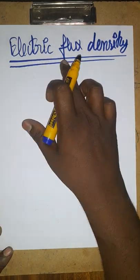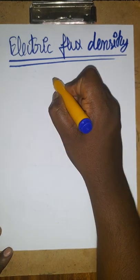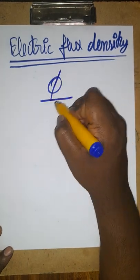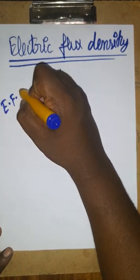Hello student, today we are going to see electric flux density, its unit and dimension formula. Actually, electric flux density is flux per unit area.